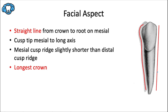Unlike the maxillary canine, the cusp tip is typically mesial to the long axis of the tooth instead of in line with it. The mesial cusp ridge is slightly shorter than the distal cusp ridge. A fun fact: this is the tooth with the longest crown incisocervically of all teeth in the mouth.